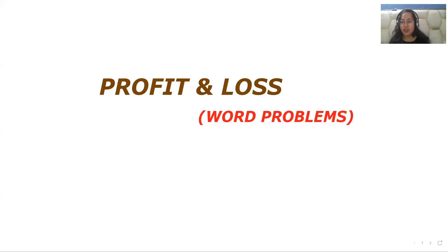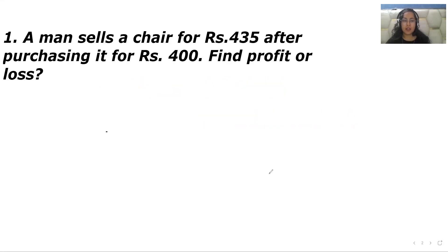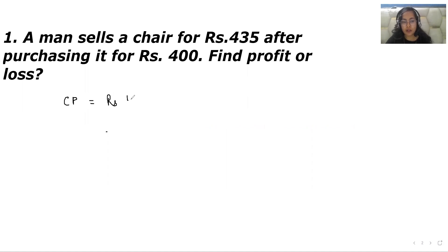Let's begin this video with the first word problem. A man sells a chair for Rs 435 after purchasing it for Rs 400. That means the cost price of that chair is Rs 400, and the selling price is Rs 435. As you can see, the selling price is greater than the cost price, which means profit occurs.